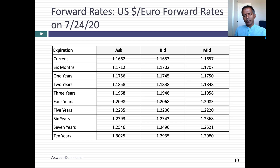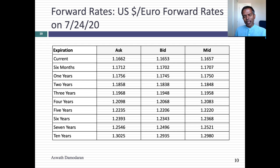Let's talk about what these forward rates include. These are the forward rates for the US dollar and euro on July 24th, 2020. You can see rates one year, two years, all the way out to 10 years. So if you're a US company with euro cash flows, you can lock in the rate at which you convert those cash flows into the future. If you have to convert US dollar cash flows into euro cash flows or vice versa, you can use these forward rates.